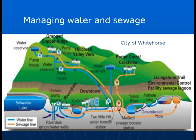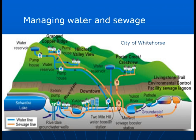Managing sewage water is actually a reasonably complex exercise, as you can see by this water and sewer plan of the city of Whitehorse. The water originates from the Riverdale Wells and Schwatka Lake and goes into a system of pipe that's pumped throughout the city up to Porter Creek, Crestview, Granger, Copper Ridge, and stored in a series of water reservoirs. The sewage is then collected in a system of gravity sewers that ultimately feeds down to the Maxwell Sewage Booster Station and is pumped out to the Livingston Trail Environmental Control Sewage Lagoon. From there it's treated in the lagoon and ultimately discharges into the Yukon River. So you can see it's a fairly complex system used for the supply of water and the treatment of sewage.